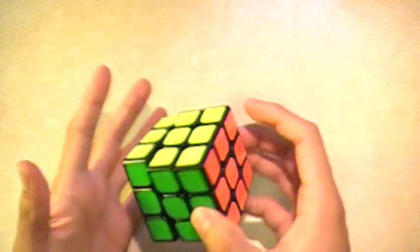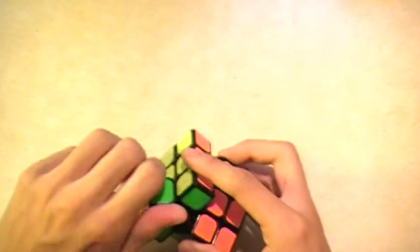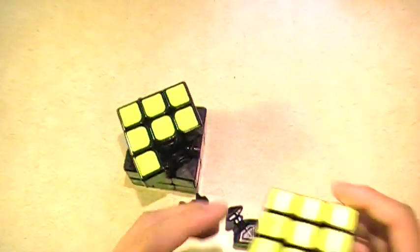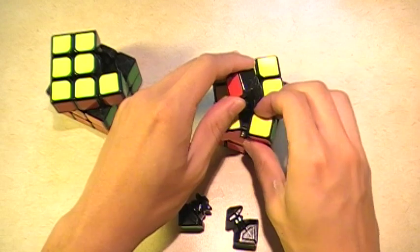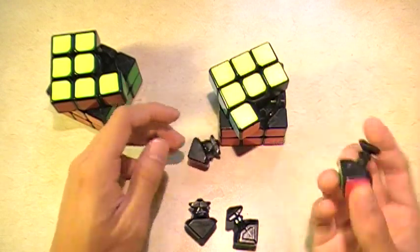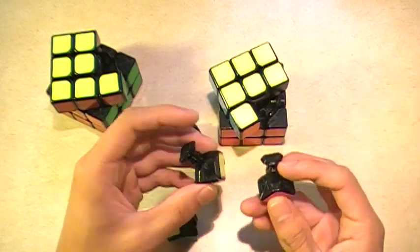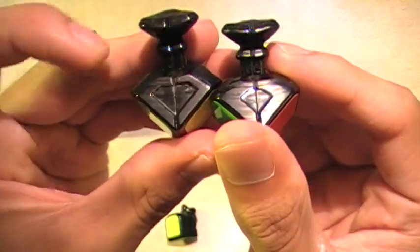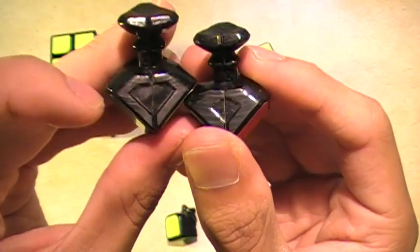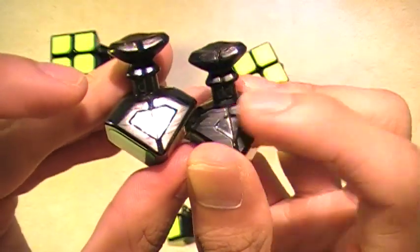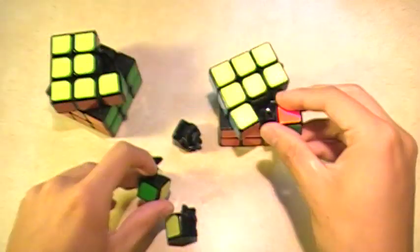So let's just go quickly look at the mechanism real quick and see kind of what they changed. So this is a mini Aolong, but they used the V1 mechanism, at least the one I have. So here is a comparison real quickly. They widened this base for some odd reason. This one's smaller, and that's the only really noticeable difference.